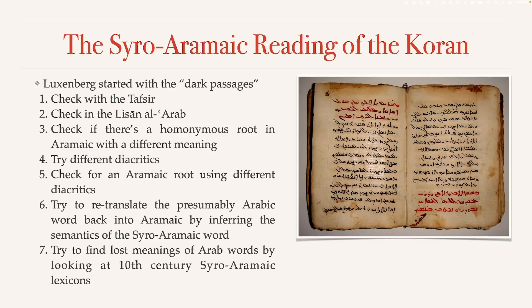It is very rare that Luxenberg found something in the tradition that makes more sense than what is commonly understood today. If he did find anything, it would be over at that point. Only if he doesn't find something does he go to the next step. Step two is to check with the Lisan al-Arab for other possible semantic meanings — one of the oldest and most extensive dictionaries of the Arabic language.